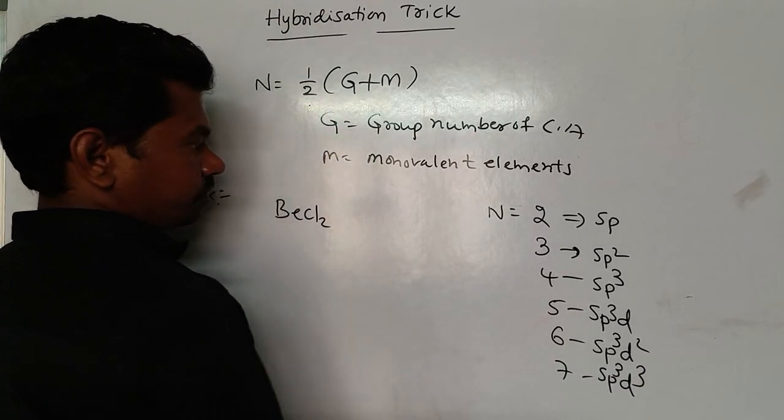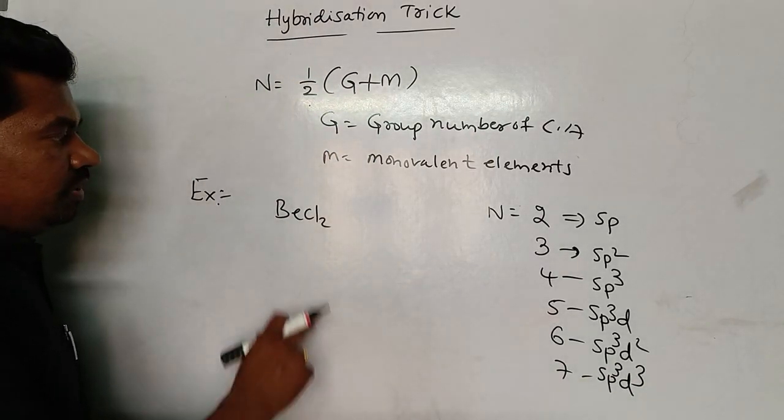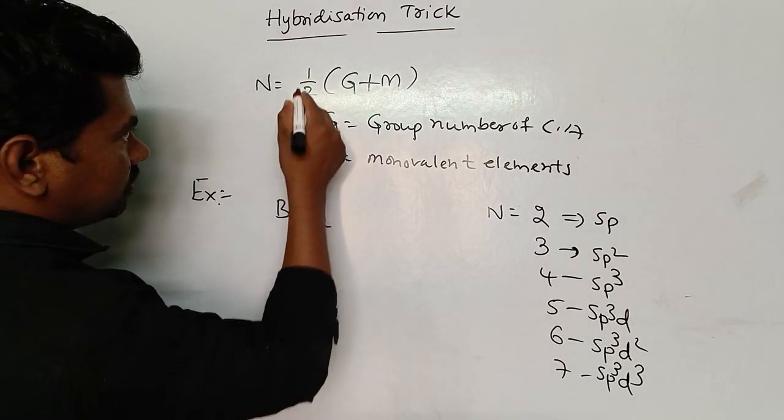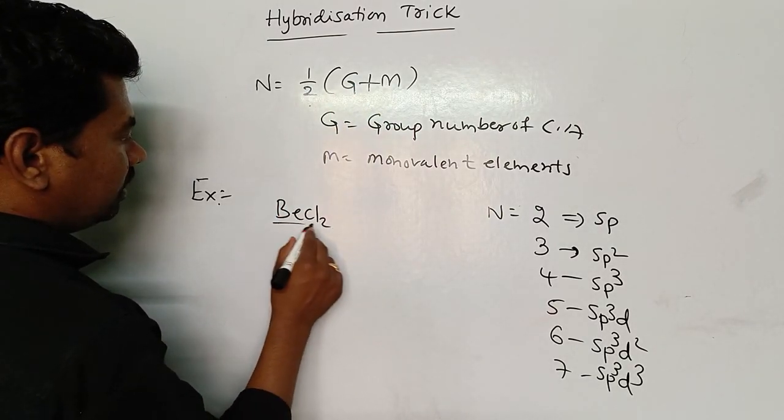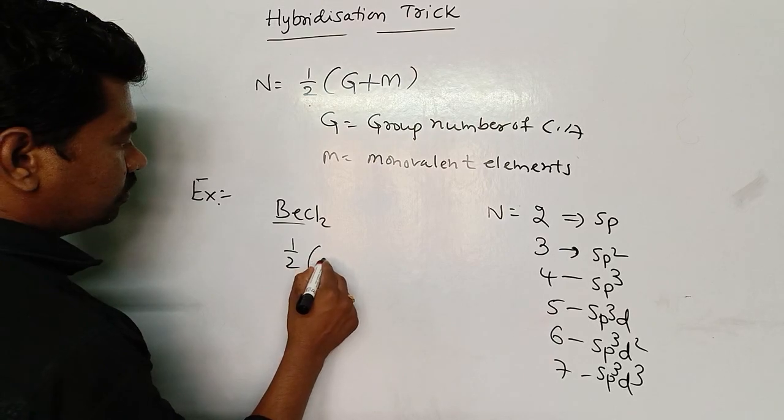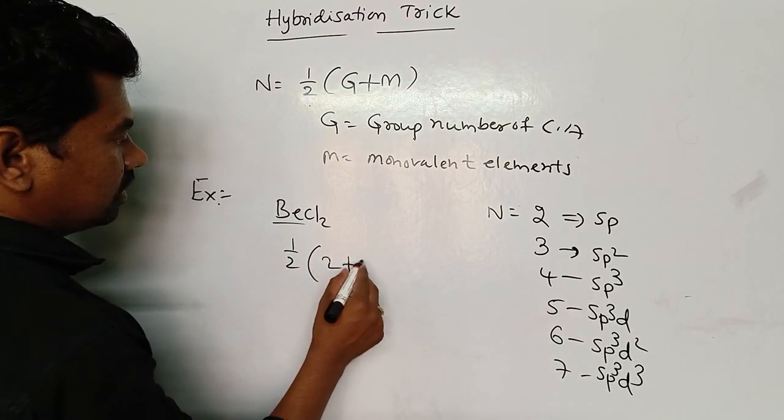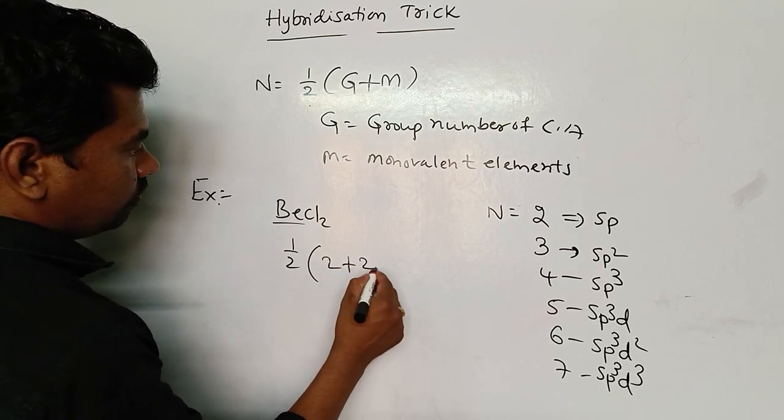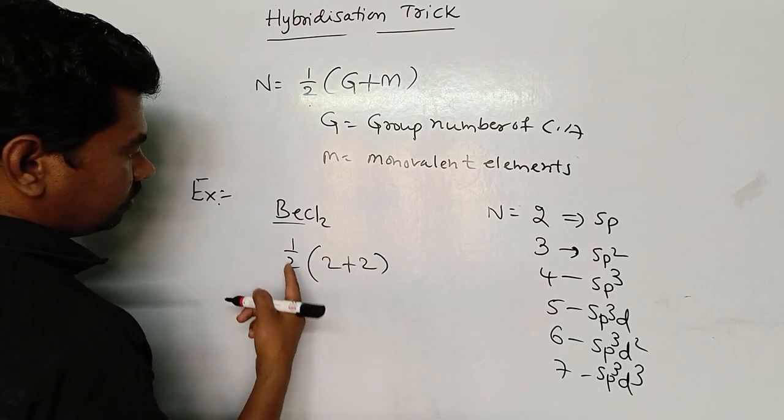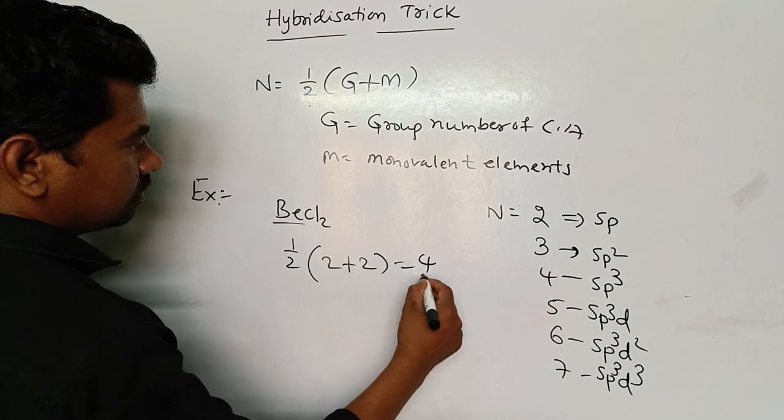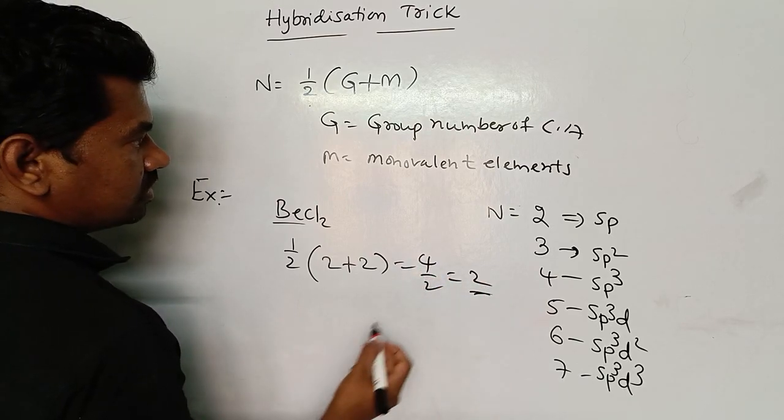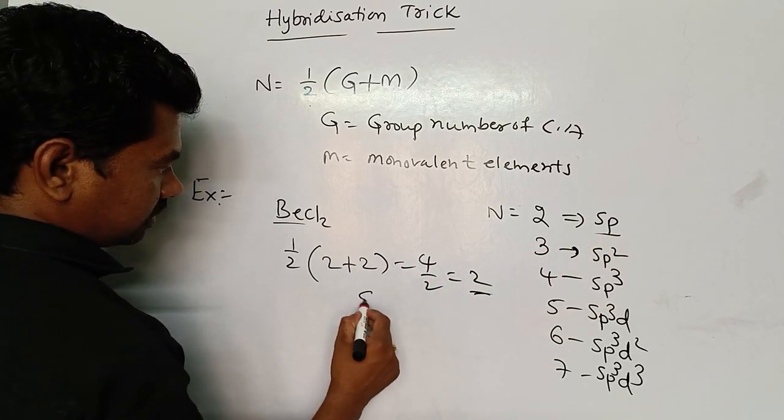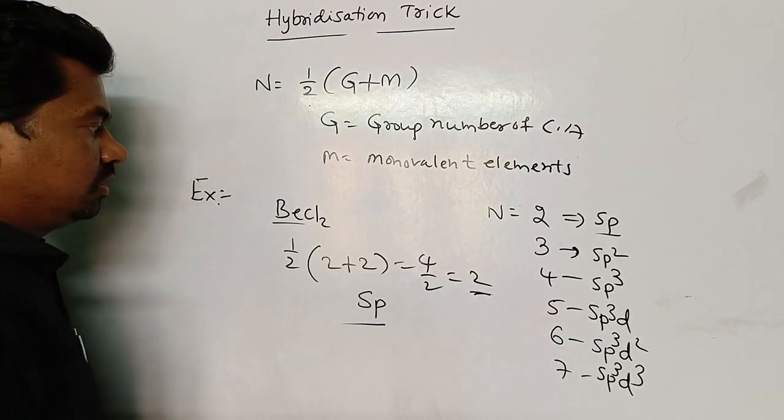In this molecule, if you substitute here, beryllium's group number is 2, plus there are two monovalent elements, two chlorines. So 2 plus 2 equals 4, then 4 divided by 2 gives us 2. So 2 means sp hybridization is present in this molecule.